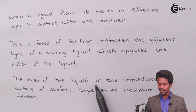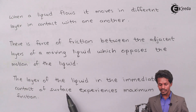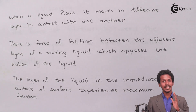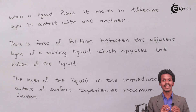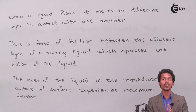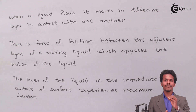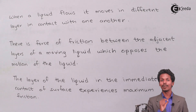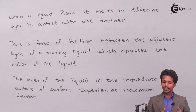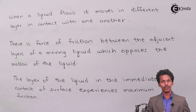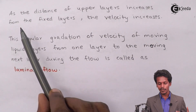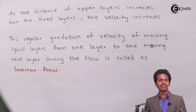The layer of liquid in immediate contact with the surface experiences maximum friction — that is, maximum viscosity. As the distance of upper layers increases from the fixed surface layer, the velocity also increases.